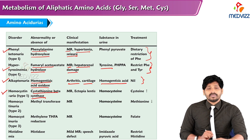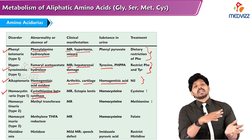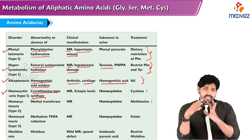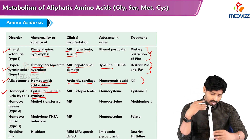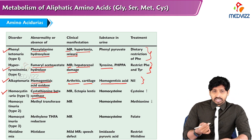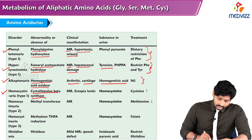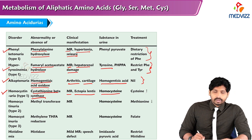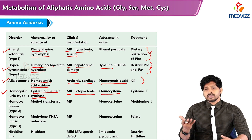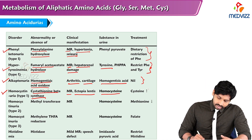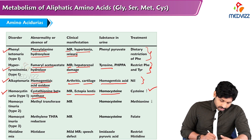Next is homocystinuria type 1, where cystathionine beta-synthase is deficient. Homocysteine cannot be converted into cystathionine, and cystathionine cannot be converted to cysteine, so cysteine synthesis is blocked. High levels of homocysteine lead to mental retardation and ectopia lentis. The main substance in the urine is homocysteine, and the treatment is to provide cysteine in the diet since its synthesis is impaired.